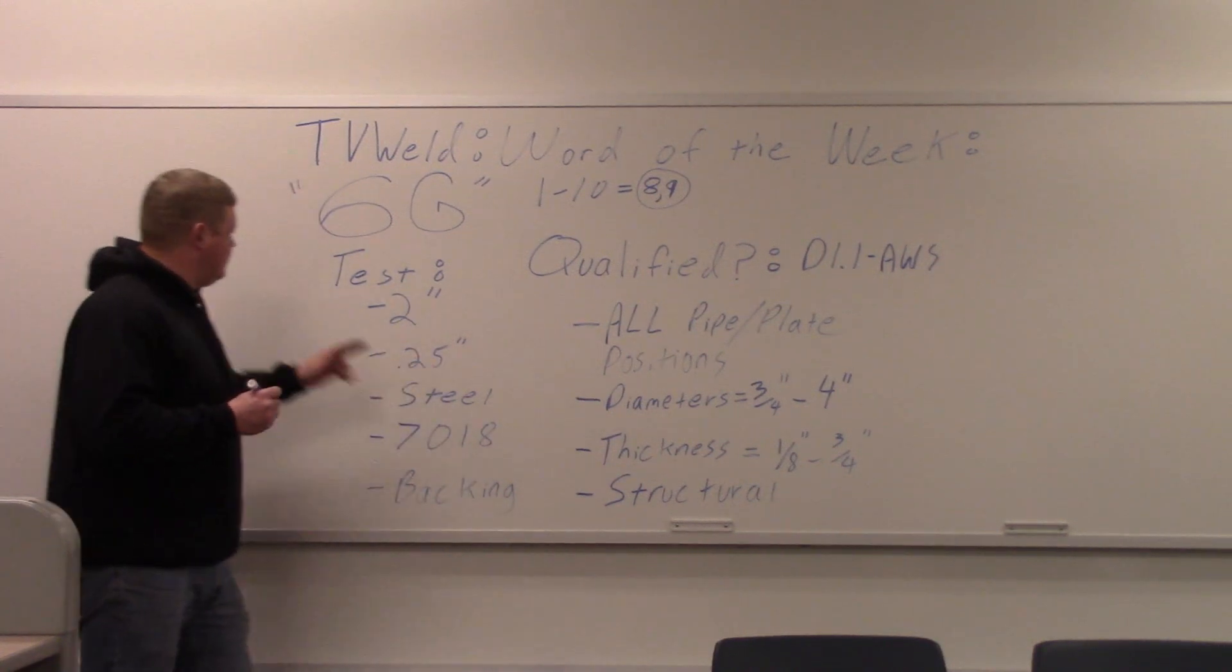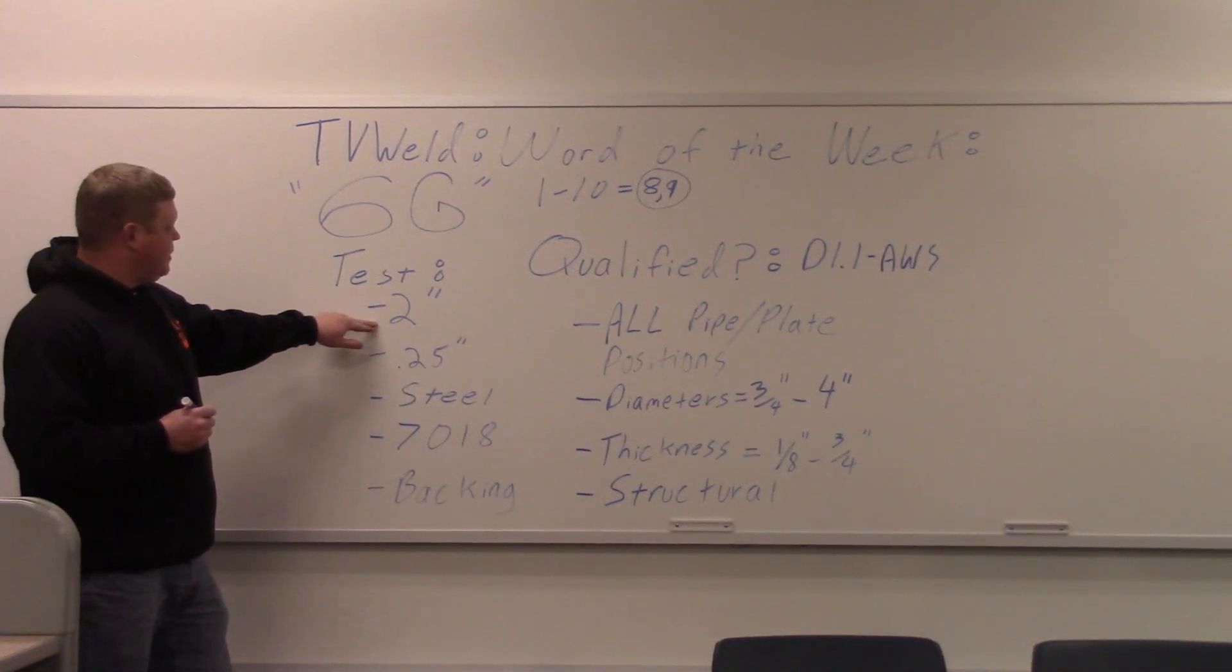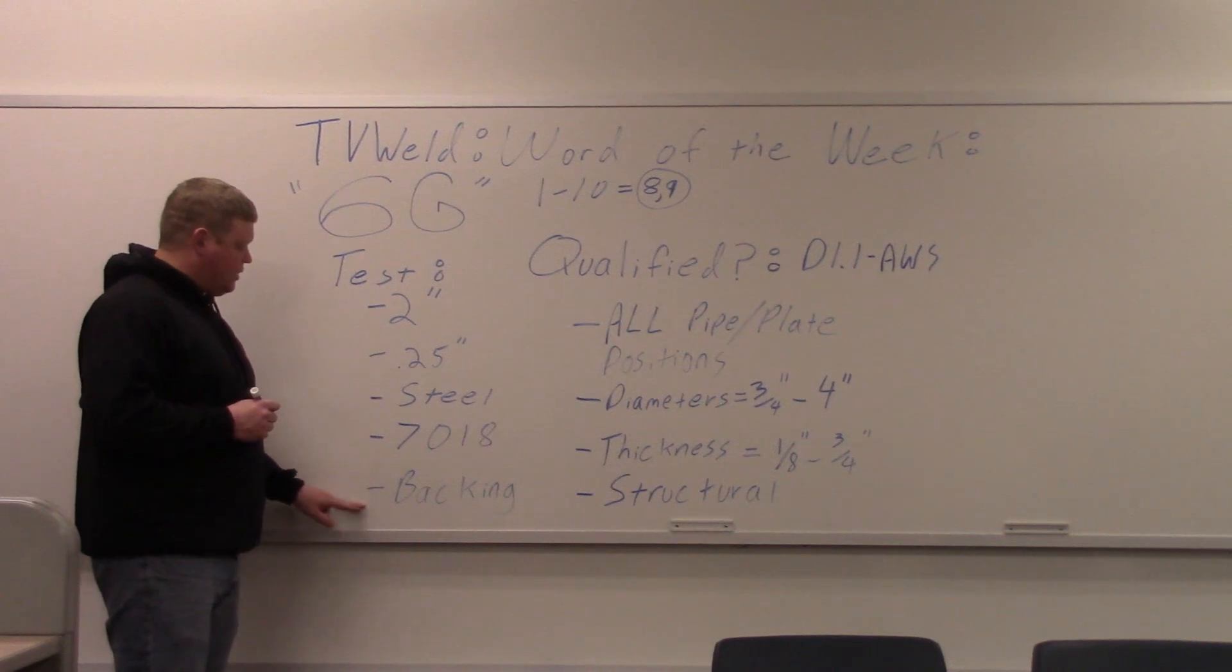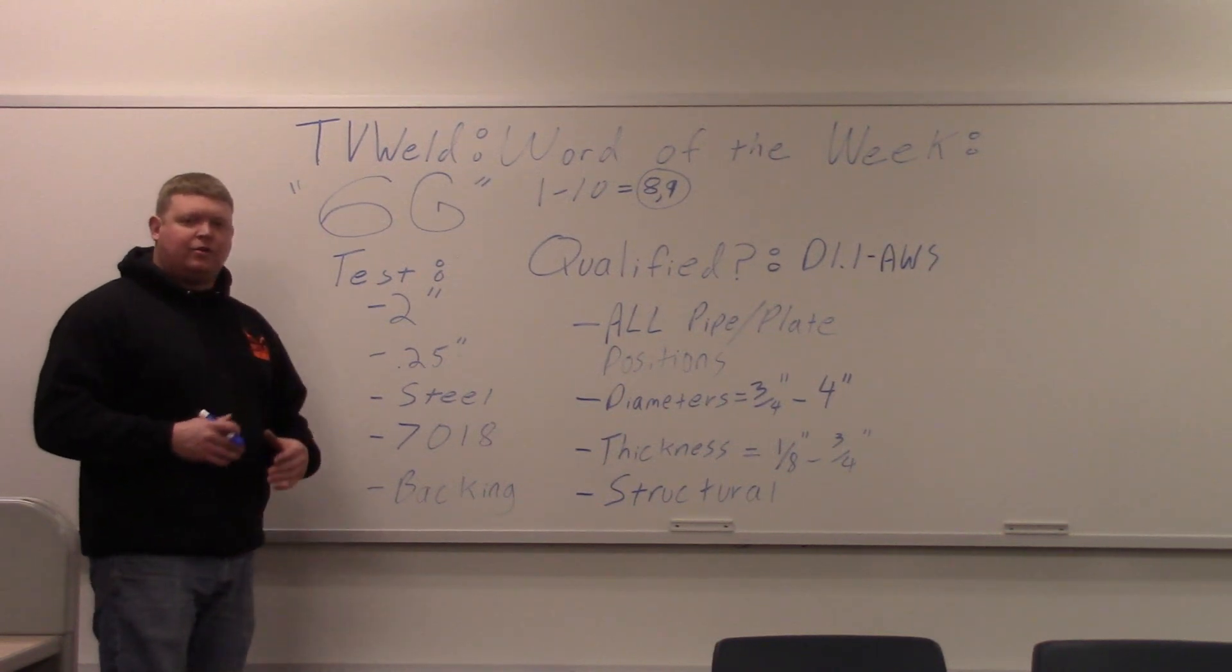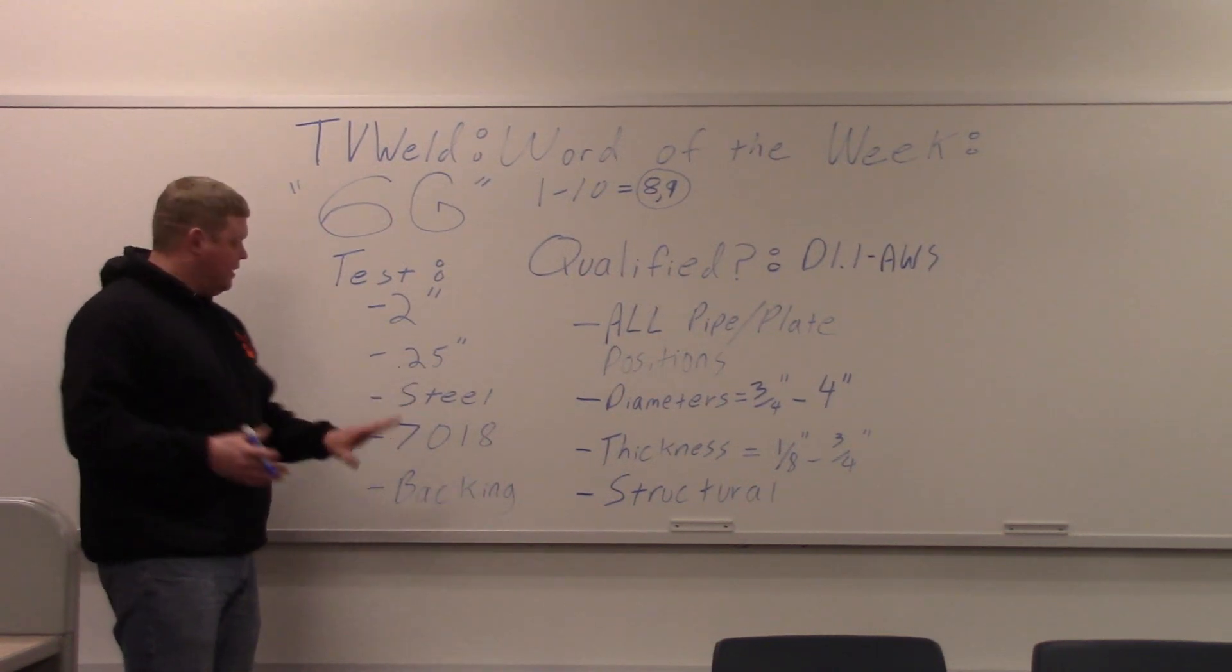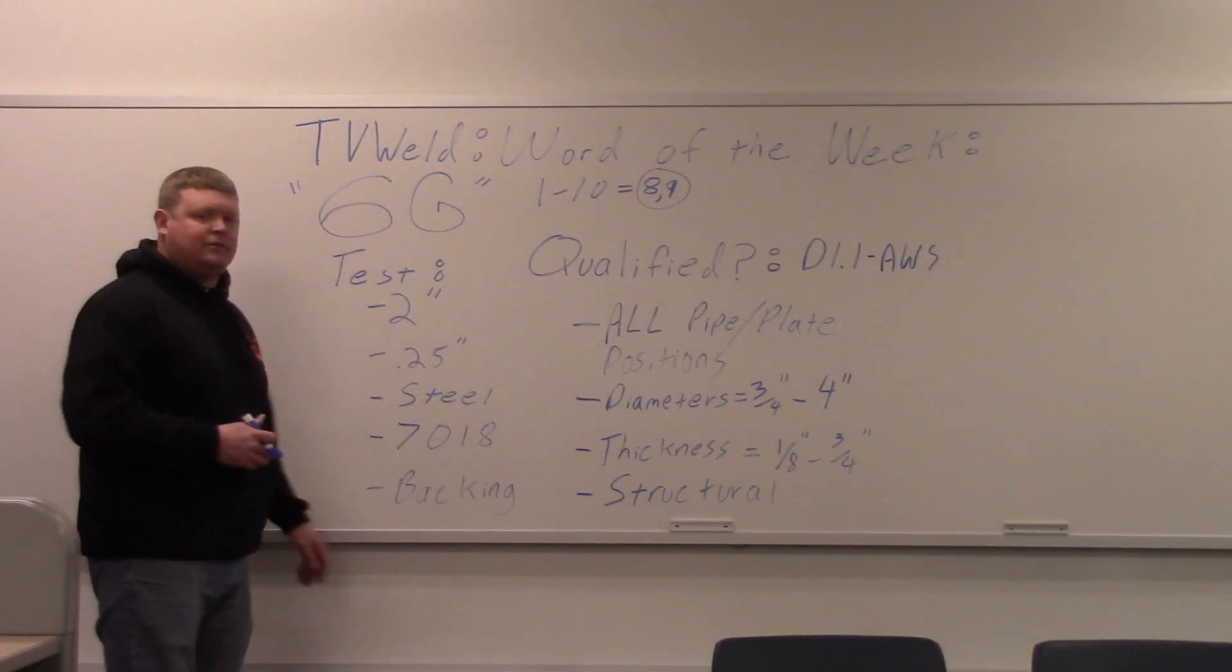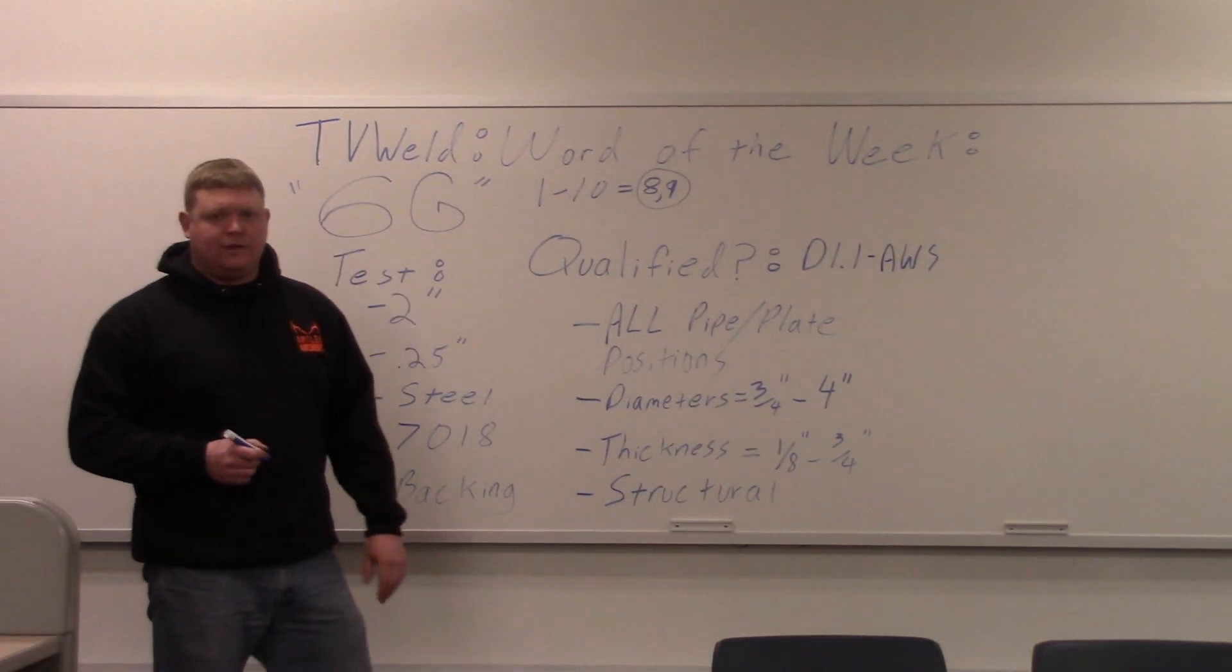So our imaginary test that we're doing here, 2-inch pipe with 0.25 wall thickness, it's steel, you're going to weld it with 7018, and you're going to use a backing ring. So we're going to pretend like we just certified you to this right here. So you're 6G certified to all that. What does that do for you in the real world?